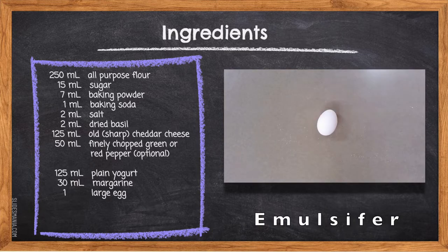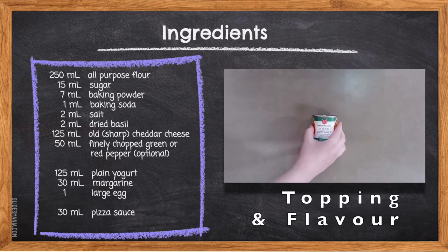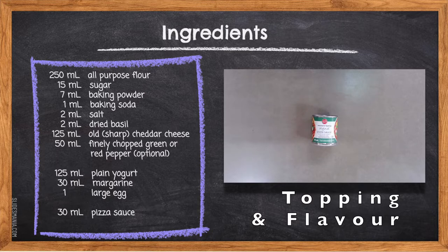Using margarine instead of butter is better for this recipe as we will be baking at a really hot high temperature and this will cause butter to burn whereas margarine will not. One large egg — egg contributes to the nutrition of the mixture but is also known as an emulsifier, which will bind two unlikely products together such as the yogurt, which is mainly water-based, and our melted margarine, which is oil-based.